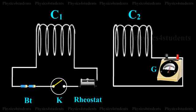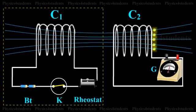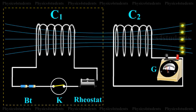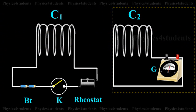This is because when the current in C1 decreases from maximum to zero value, the magnetic flux linked with the coil C1 decreases. Hence, the magnetic flux linked with the coil C2 also decreases. This causes the deflection in the galvanometer in the opposite direction.